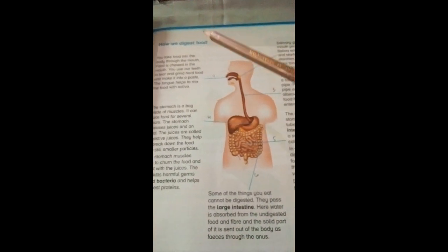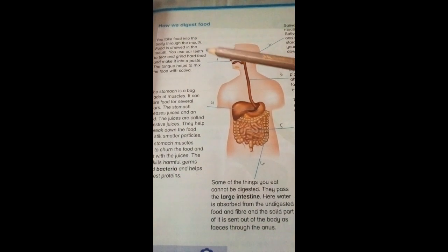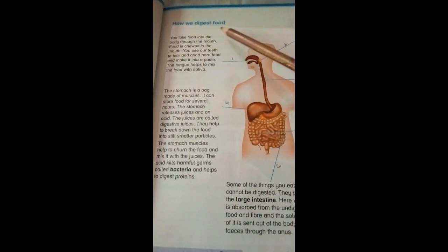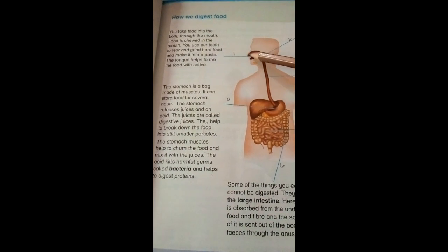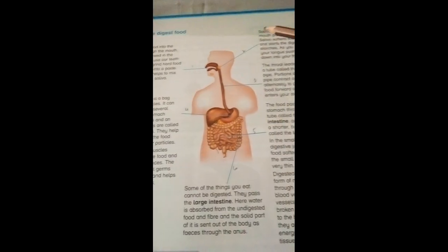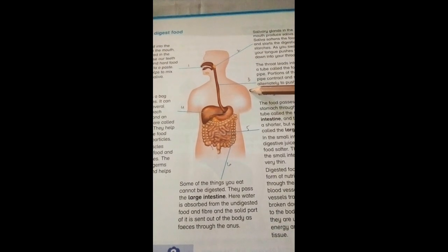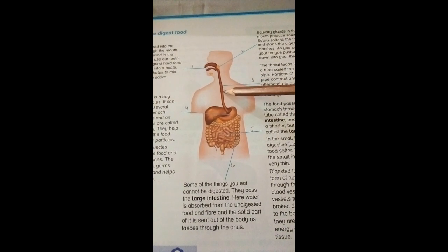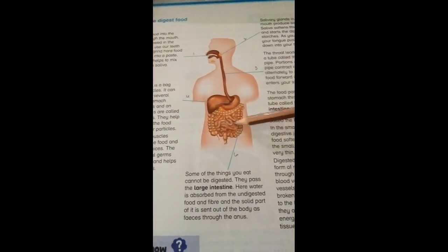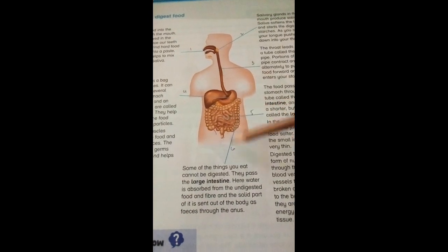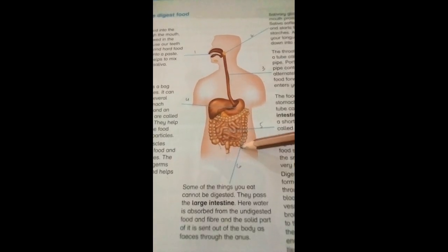So the parts of digestion are: first, the mouth; then salivary glands; then the throat and windpipe; then the stomach; then the small intestine; and finally the large intestine.